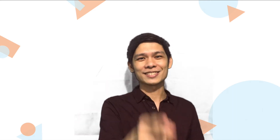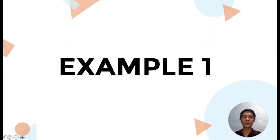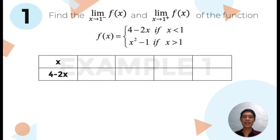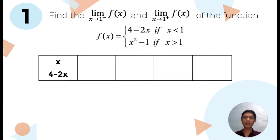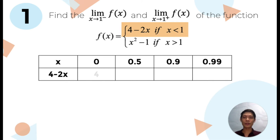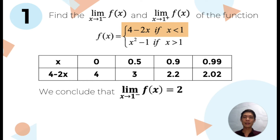To further explain this, let's have a few examples. For example number 1, let's find the left-hand limit and right-hand limit of the function: 4 minus 2x if x is less than 1, and x squared minus 1 if x is greater than 1. First, let's find the limit of the function as x approaches 1 from the left. Since this is the left-hand limit, we will be using x values less than 1. Evaluating the function using these values, we can see that the left-hand limit of the function is equal to 2.